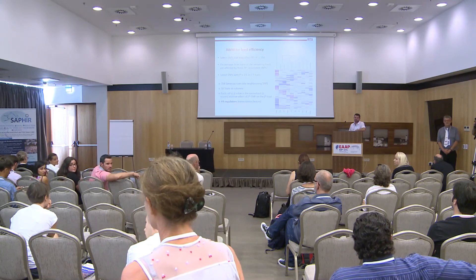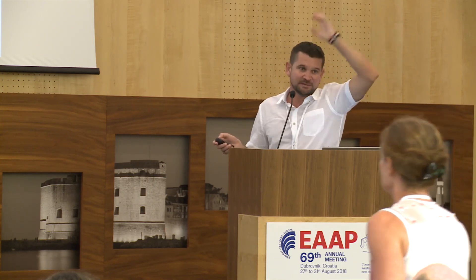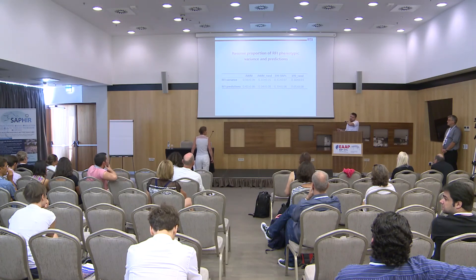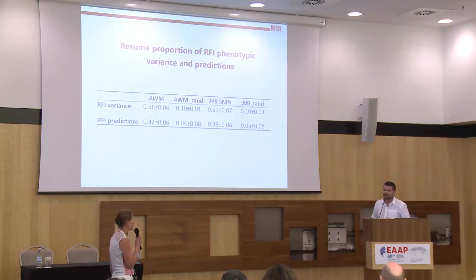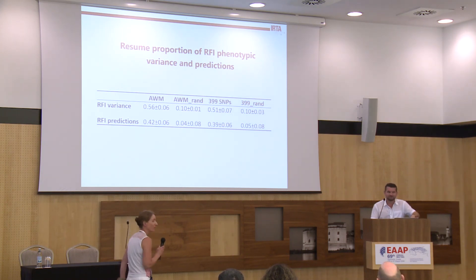A final question concerned the strategy for the 399 selected markers — the questioner suggested it is now common practice to also include the remaining 30,000–40,000 markers in a separate G-matrix and fit both simultaneously. The presenter confirmed they had done this analysis but it was not shown in the current slides, noting the goal was to know the proportion of phenotypic variance explained by all SNPs and compare it to the 399 SNPs. The full results were available on the presenter's computer.